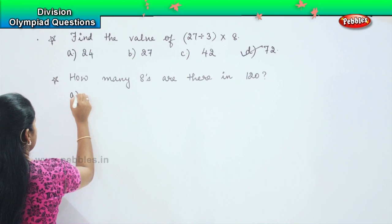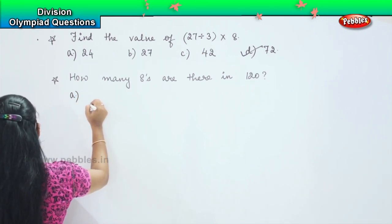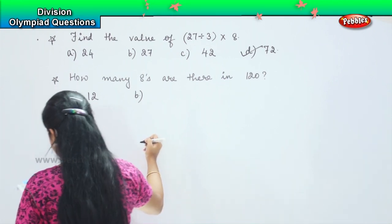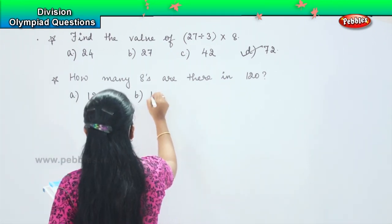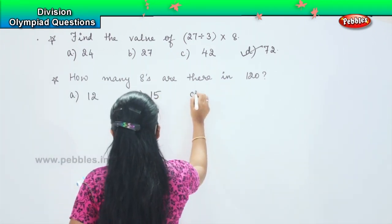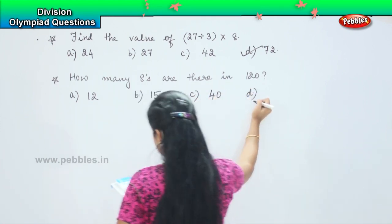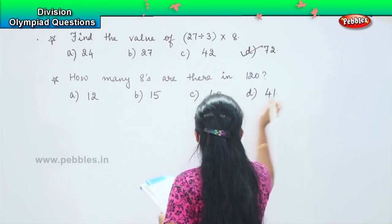And your options are 12, option B 15, option C 40, and option D 41.